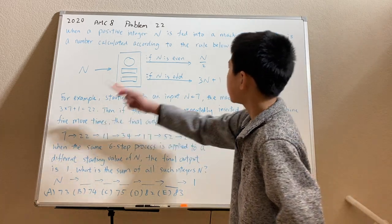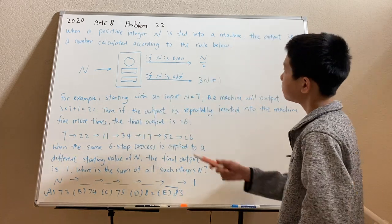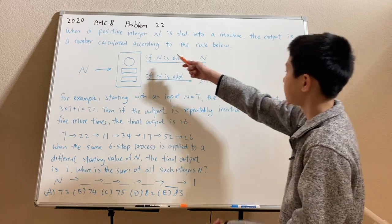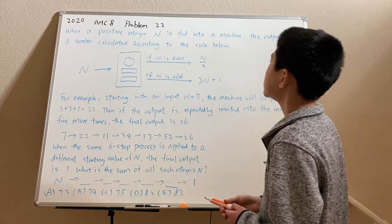So 7, you input into the machine, you get 22. 22 into the machine, 22 is even, so you do 22 divided by 2, which is 11.